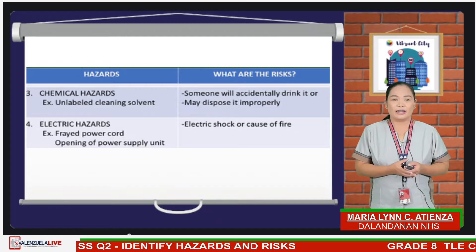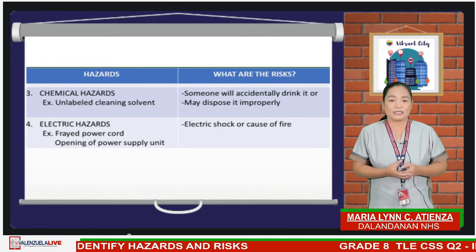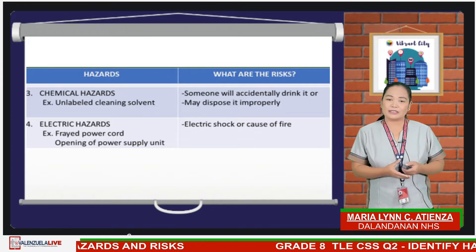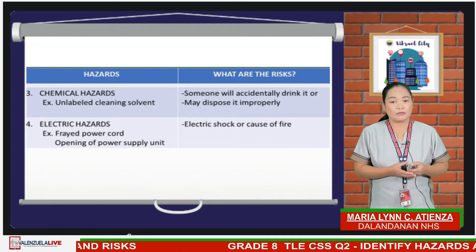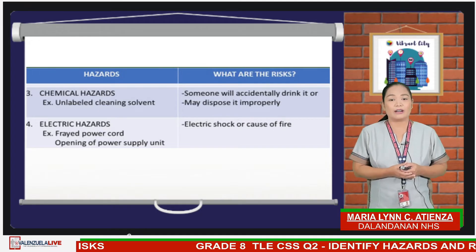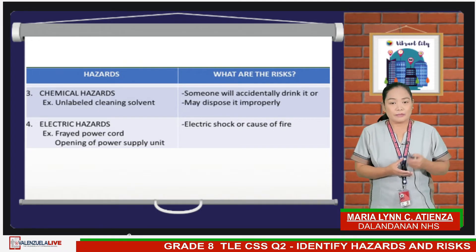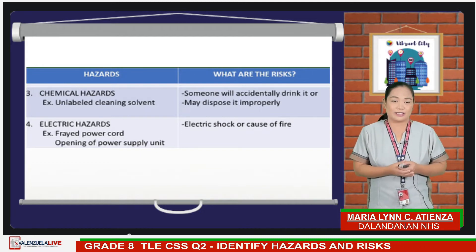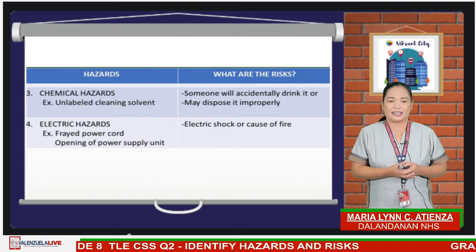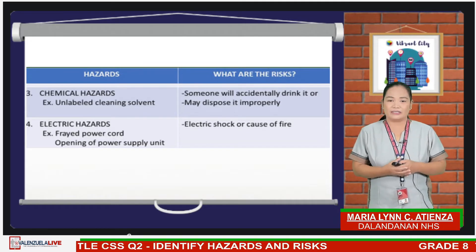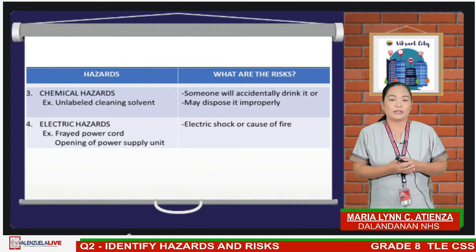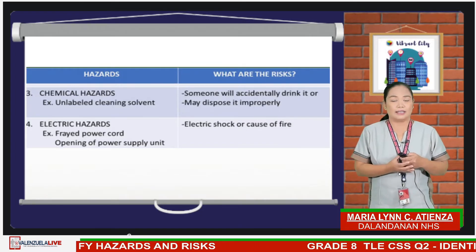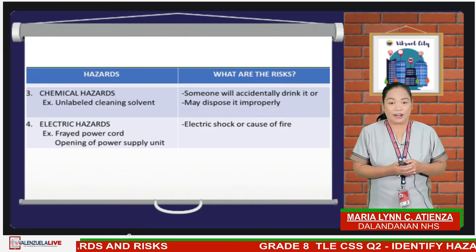Chemical hazards are hazards associated with chemicals. An example is unlabeled cleaning solvents, and the risk is that someone may accidentally drink it or dispose of it improperly. Electrical hazards are hazards associated with electricity. Examples are frayed, unraveled, or worn-out power cords and opening of power supply units. The possible risks are electric shock and cause of fire.